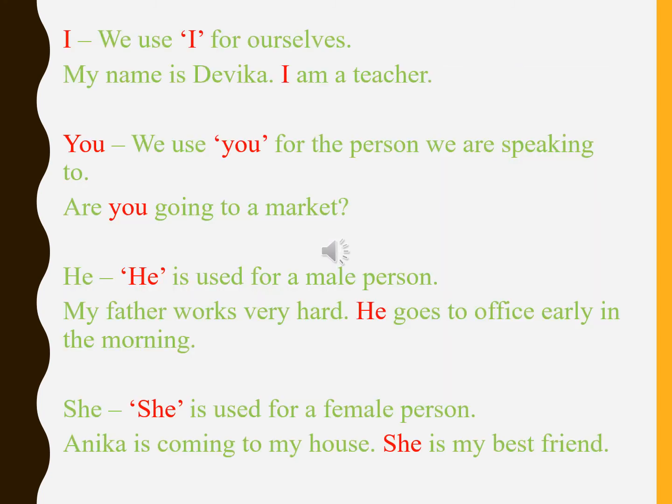So students, let us read more examples of pronouns. The pronoun 'I' — we use 'I' for ourselves, that is when we are talking about ourselves. Example: My name is Devika. I am a teacher. Here I am talking about myself, so the pronoun we use for ourselves is 'I'. 'You' — we use 'you' for the person we are speaking to. Example: Are you going to the market? When we are talking to someone, the pronoun we use is 'you'.